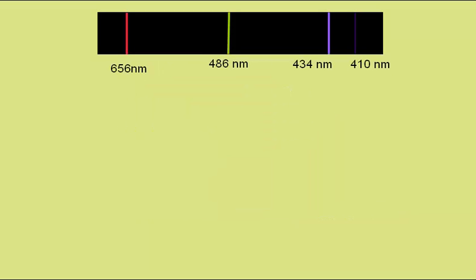If we pass the light emitted from hydrogen gas through a diffraction grating, this is what we see. Distinct lines with distinct wavelengths.